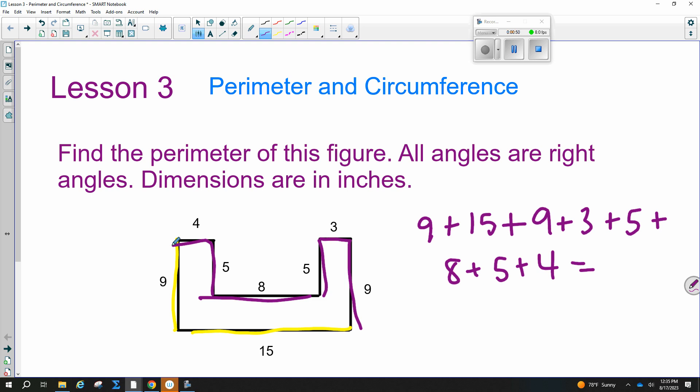Anybody got that for me? Cade, what'd you get? Fifty-eight. You guys agree? We get 58. And then you want to notice your dimensions. Perimeter is always just in inches or centimeters. If it's squared, that means area. Cubed is volume.